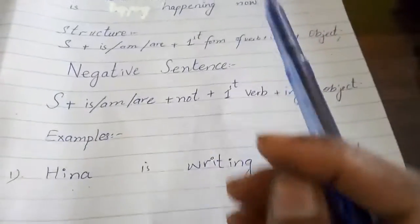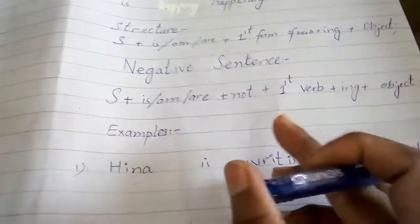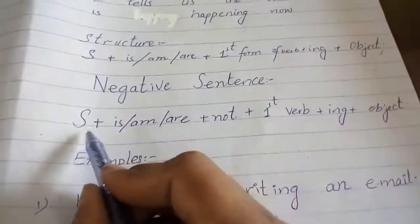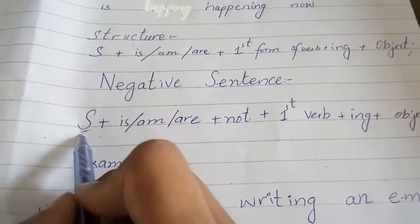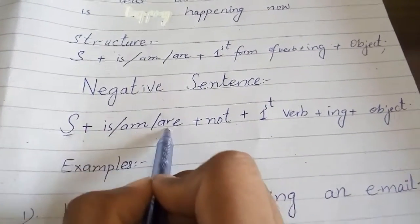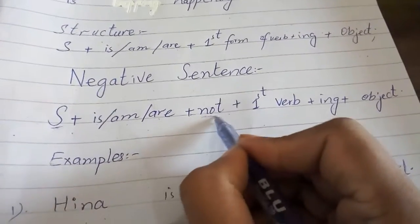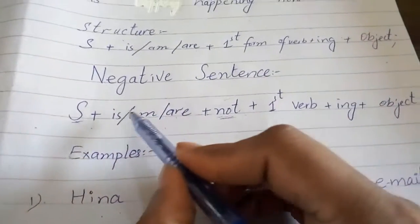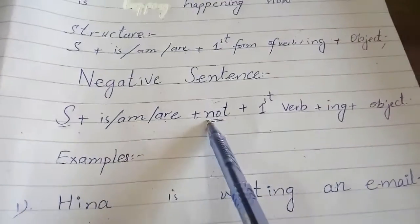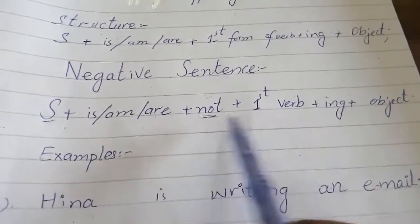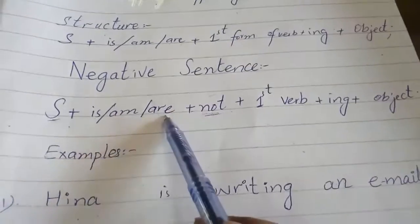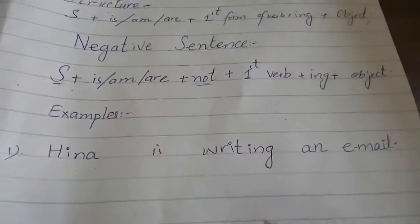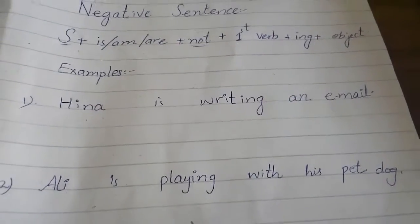So firstly, how can we make negative sentences? In the same case as affirmative, in the negative we first write the person name or subject, then we use the helping verb 'is', and then the most important thing in the negative tense is 'not'. After using the helping verb, we write 'not', and then we write the '-ing' form of the verb. All other things are the same — we just write 'not' after the helping verb.